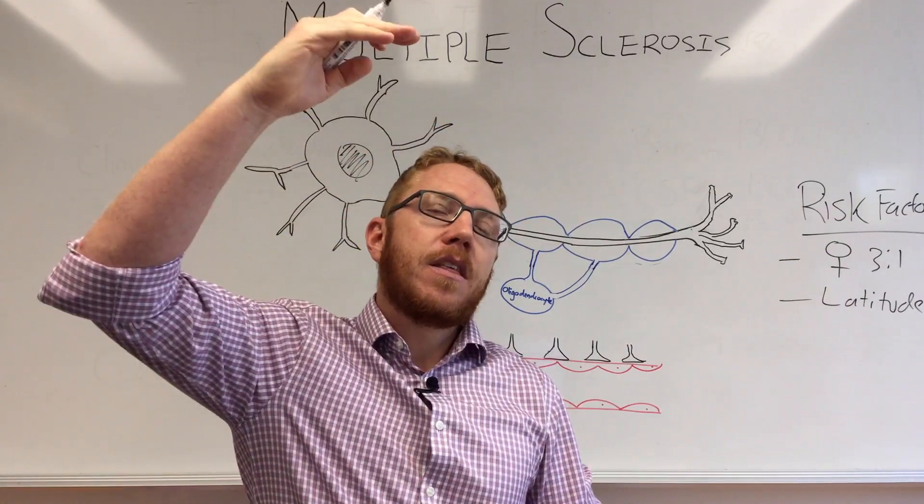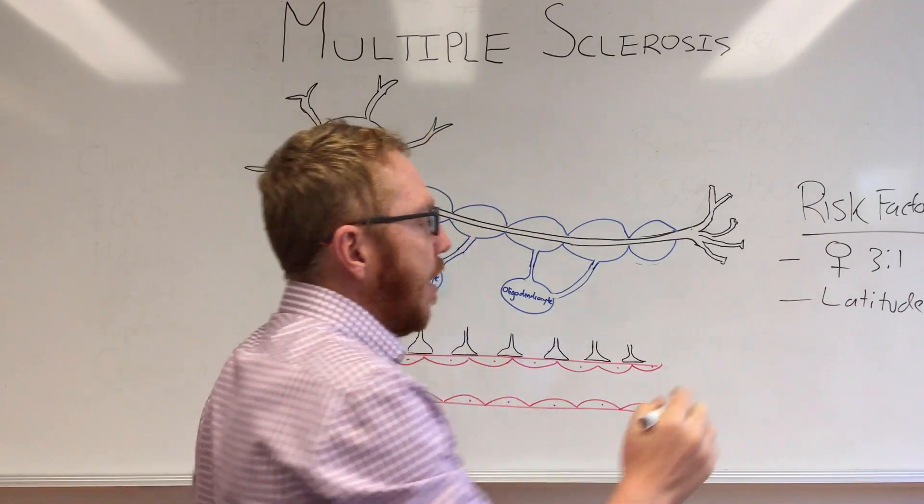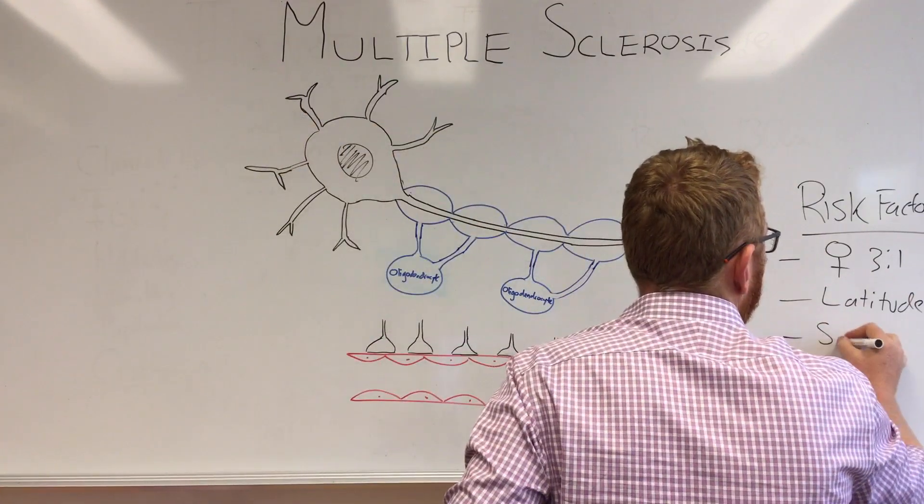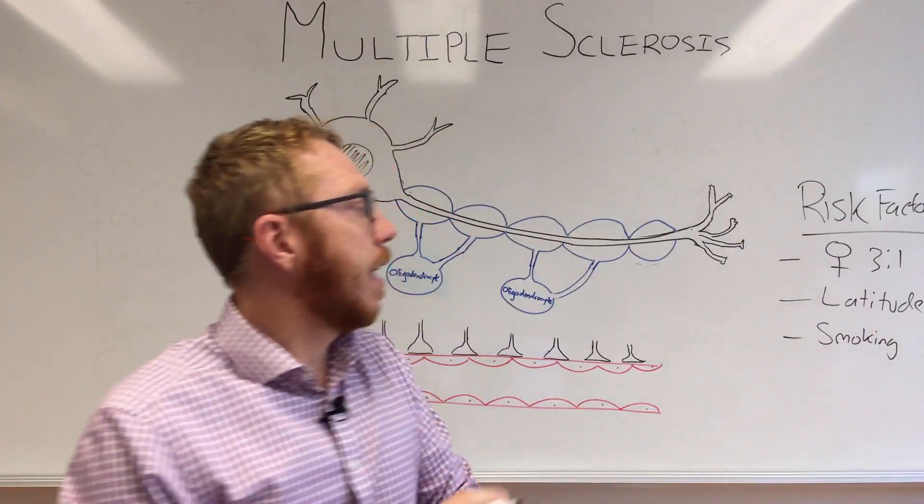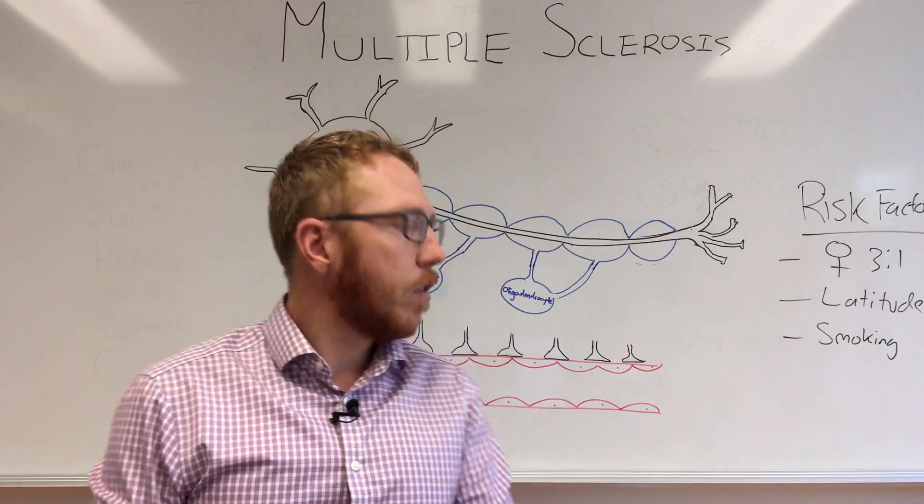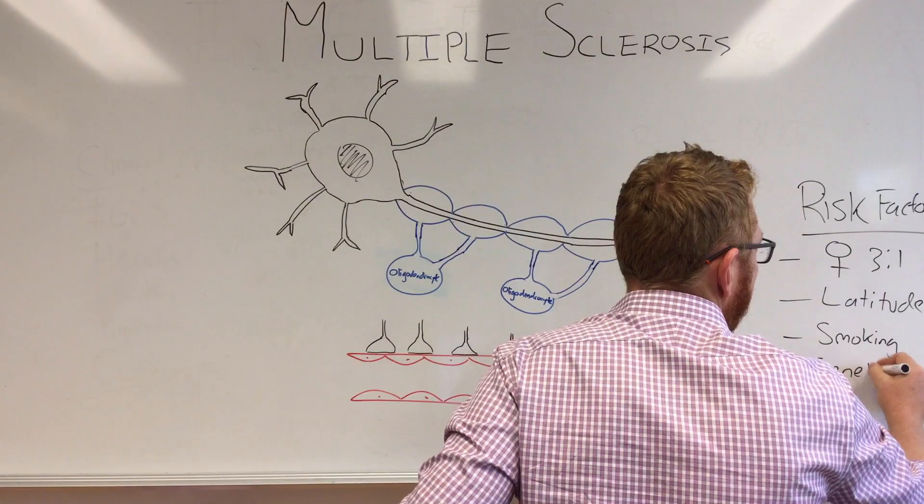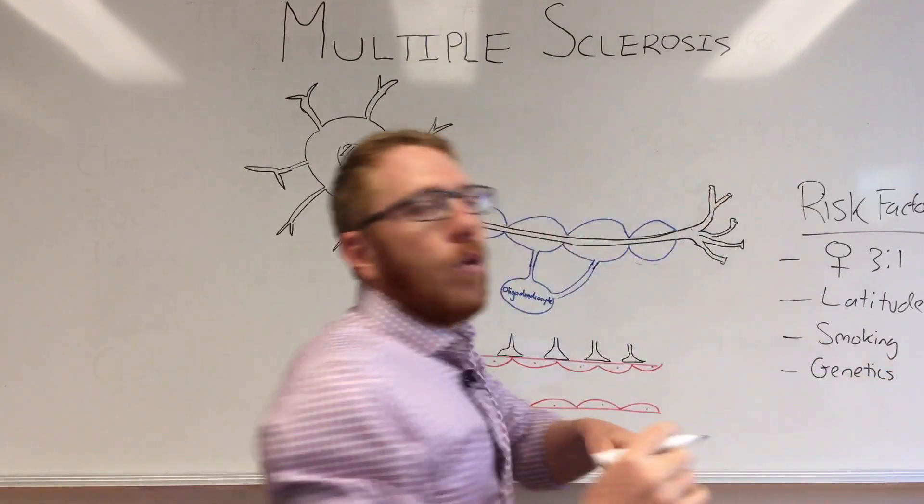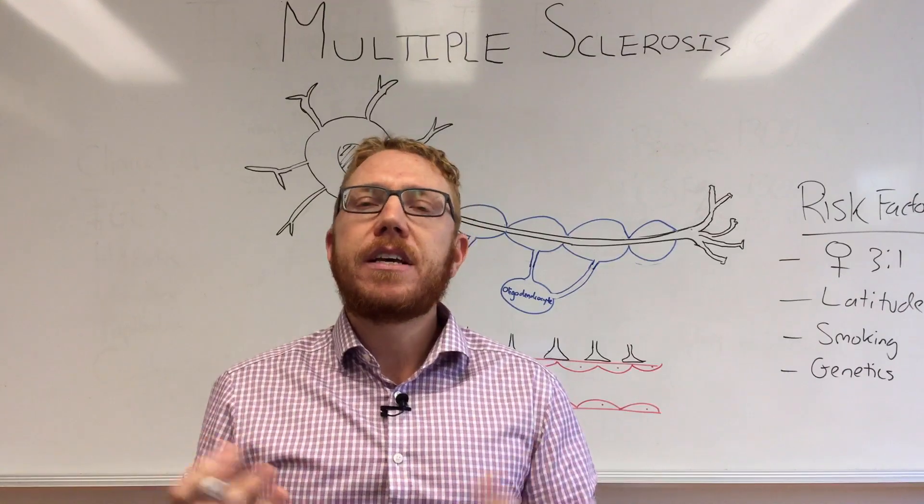As you move away from the equator and move to temperate and then into seasonal areas, the risk of developing MS increases. Another one is smoking. The literature suggests that smokers have a significant higher risk than non-smokers.